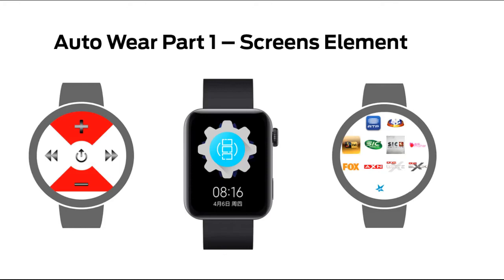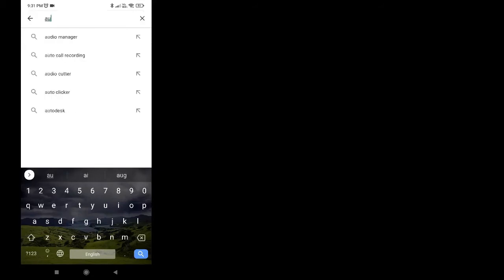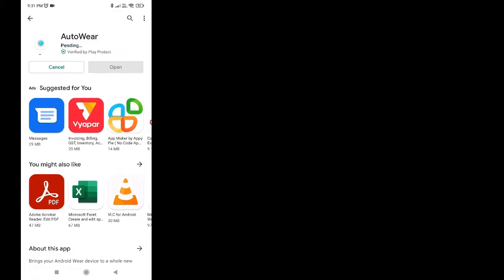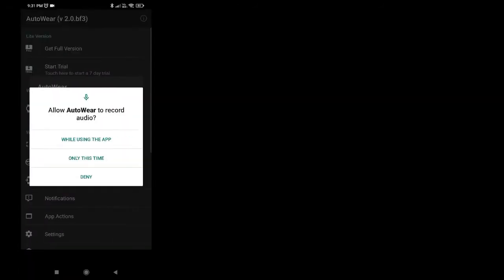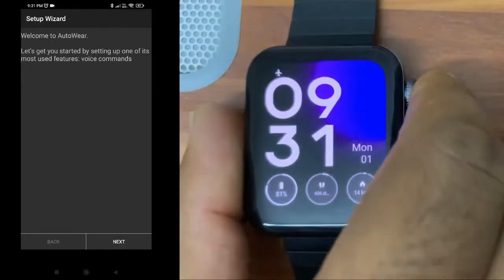Hello, welcome to Mega Wear OS. In this video we are going to see how to use the Auto Wear app. Mainly we will be seeing the Auto Wear screens element. Open the Play Store, search for Auto Wear, and install the app. You also have to install the companion app on your watch. I have given the link in the description where you can download the APK.